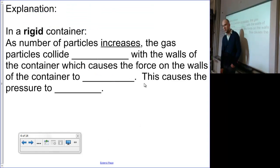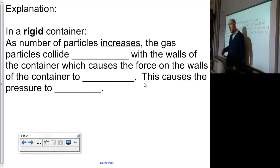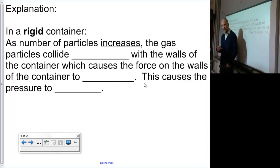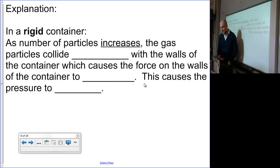Let's go back to this rigid container idea once again. A rigid container means we have a constant volume — our container cannot get bigger or smaller. Remember, our gases take the volume of the container, so the volume of our gases is going to be constant for this experiment.